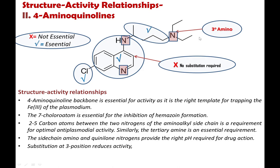For the SAR of 4-aminoquinolines: the 4-aminoquinoline backbone is very important — it is the right template to bind the heme ion of the plasmodium. The 7-chloro atom is also essential for hemozoin formation. The two-to-five carbon atom linkage of the Novaldamine side chain is very essential. The side chain amino group and quinoline nitrogen provide the right pH required for drug action. Substitution at the 3 position reduces the activity.